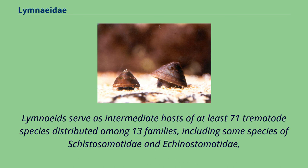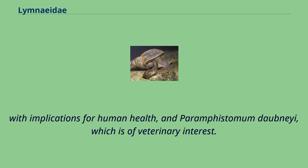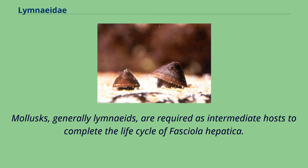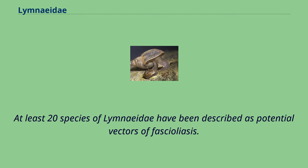Limniids serve as intermediate hosts of at least 71 trematode species distributed among 13 families, including some species of Schistosomatidae and Echinostomatidae with implications for human health, and Paramphistomum daubni, which is of veterinary interest. The most emblematic case of a parasite transmitted by limniids is Fasciola hepatica, the agent of fascioliasis. Molluscs, generally limniids, are required as intermediate hosts to complete the life cycle of Fasciola hepatica. At least 20 species of Lymnaeidae have been described as potential vectors of fascioliasis.